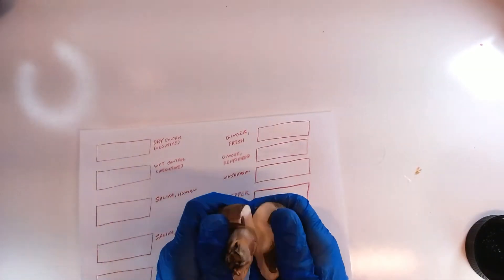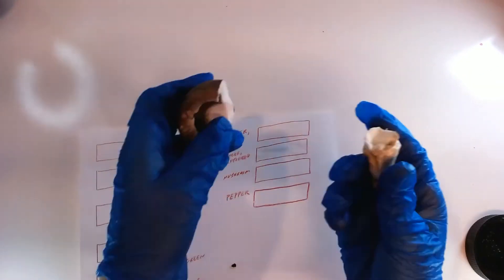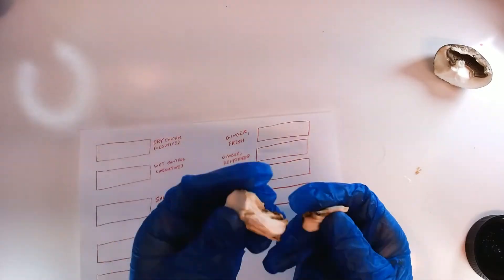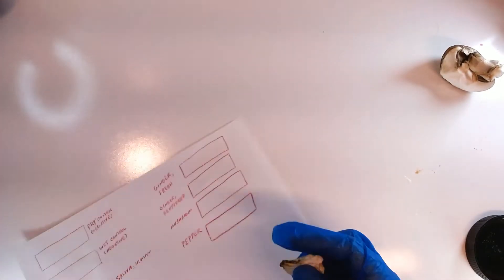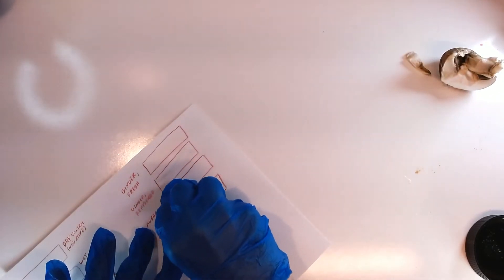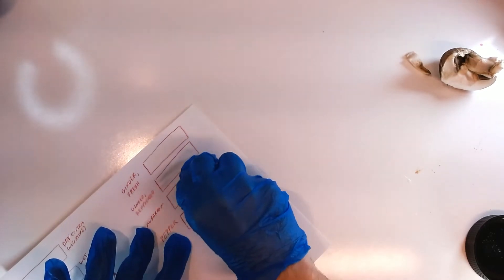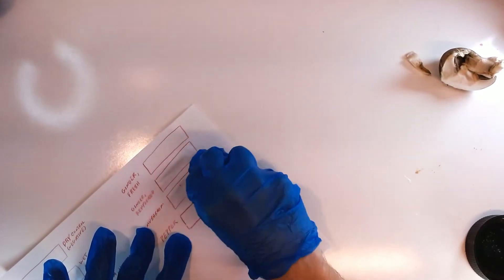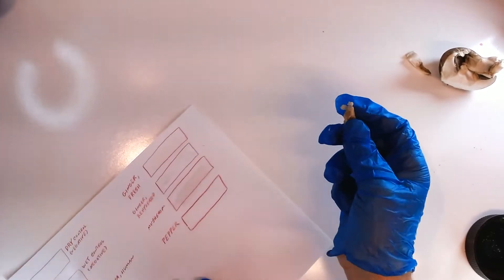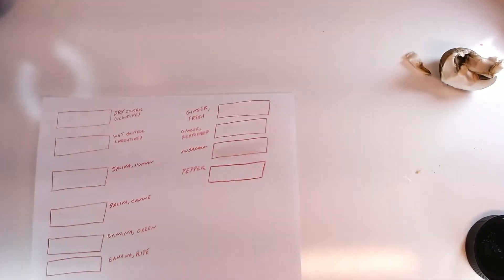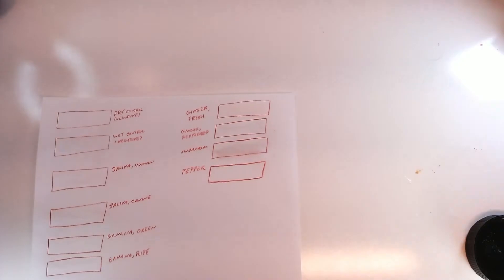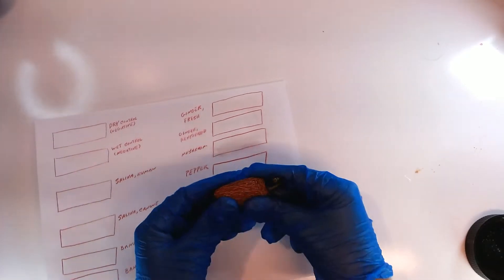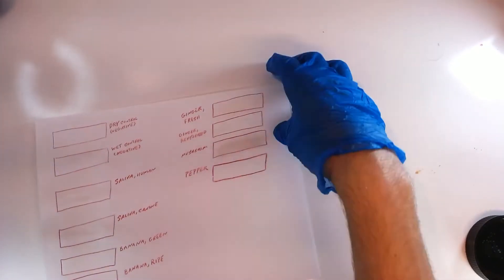The mushrooms proved a little bit difficult because they're so dry on the inside I couldn't just swab them with the cotton swab and get a good residue on the paper, so I ended up taking a small piece of the mushroom and applying it directly to the page. I ended up doing something similar with the pepper as well.